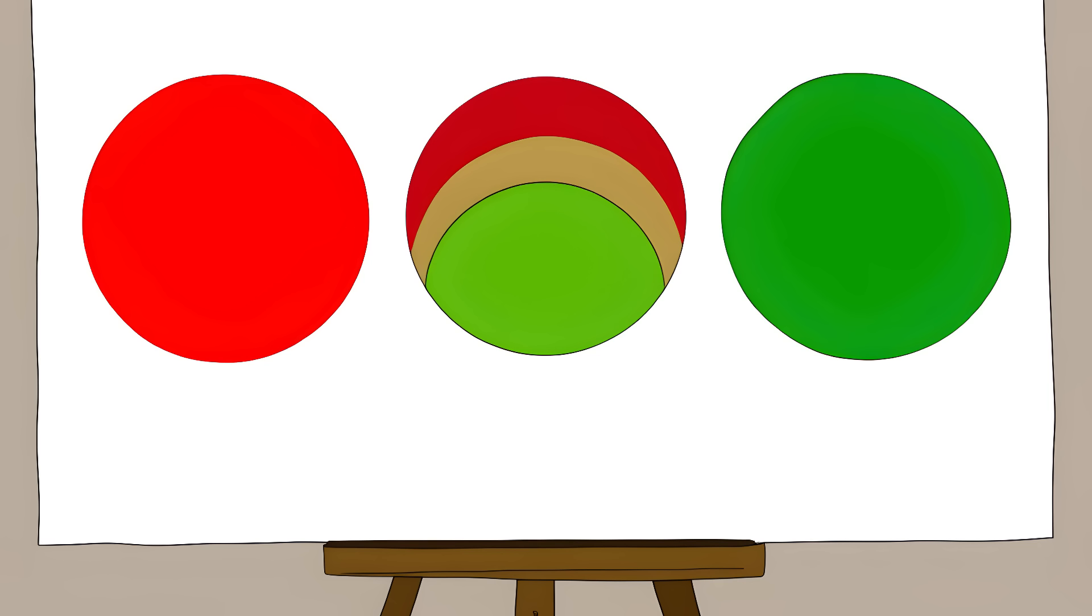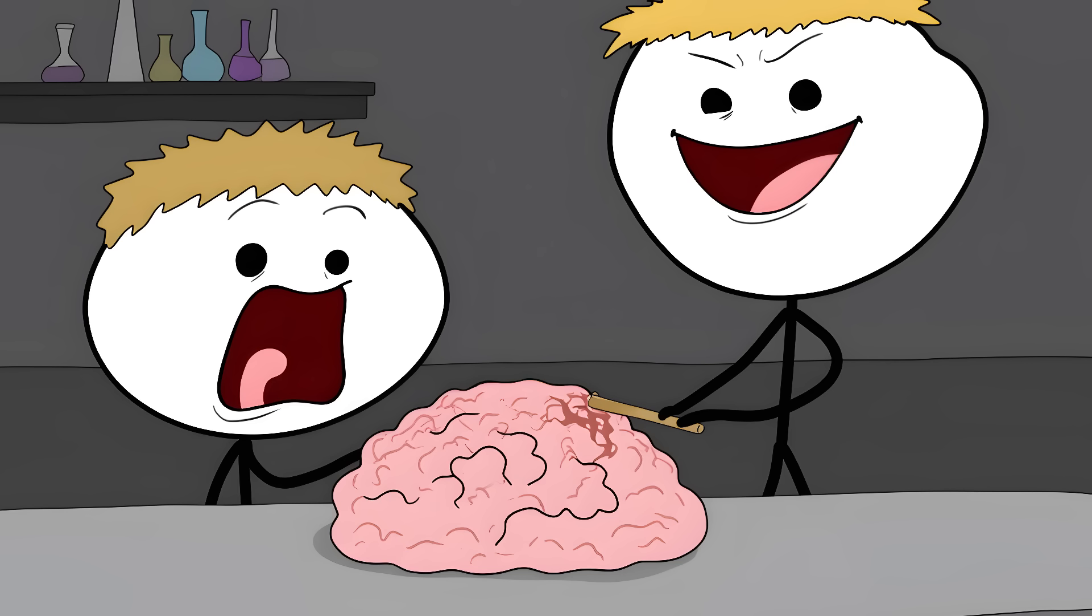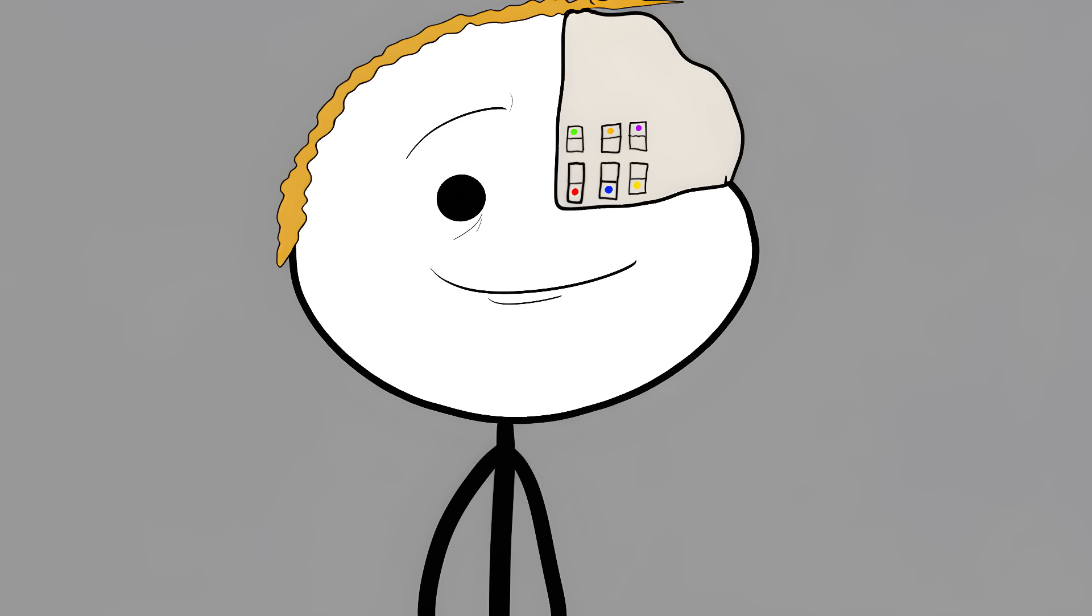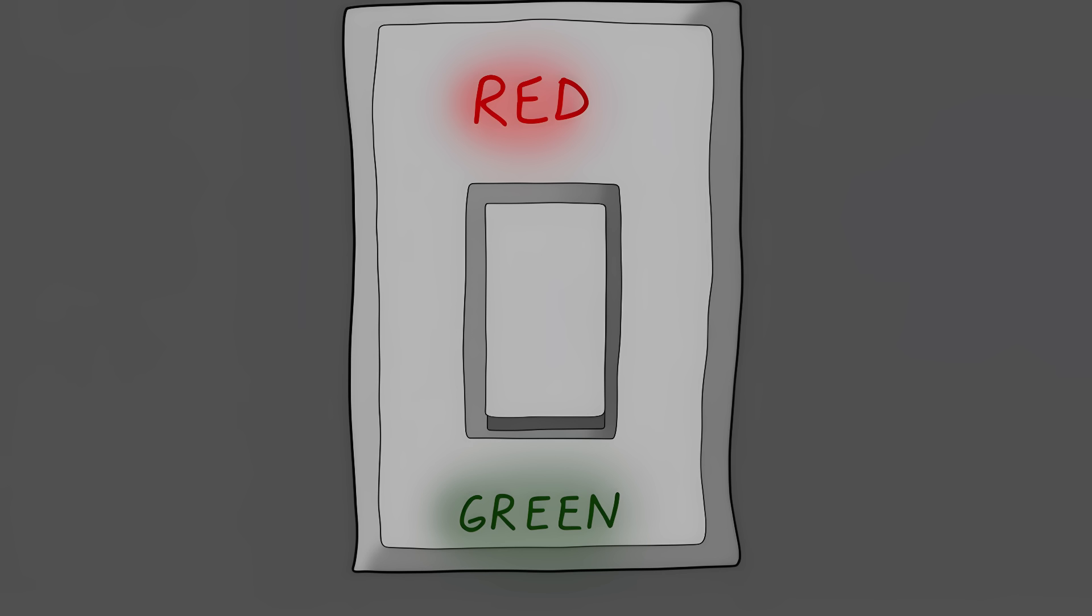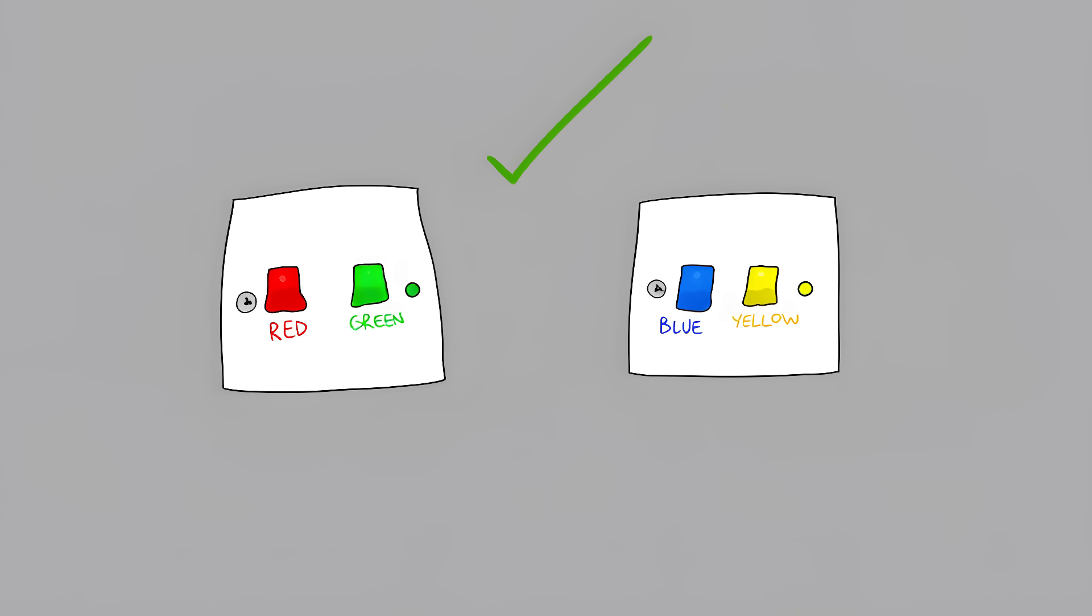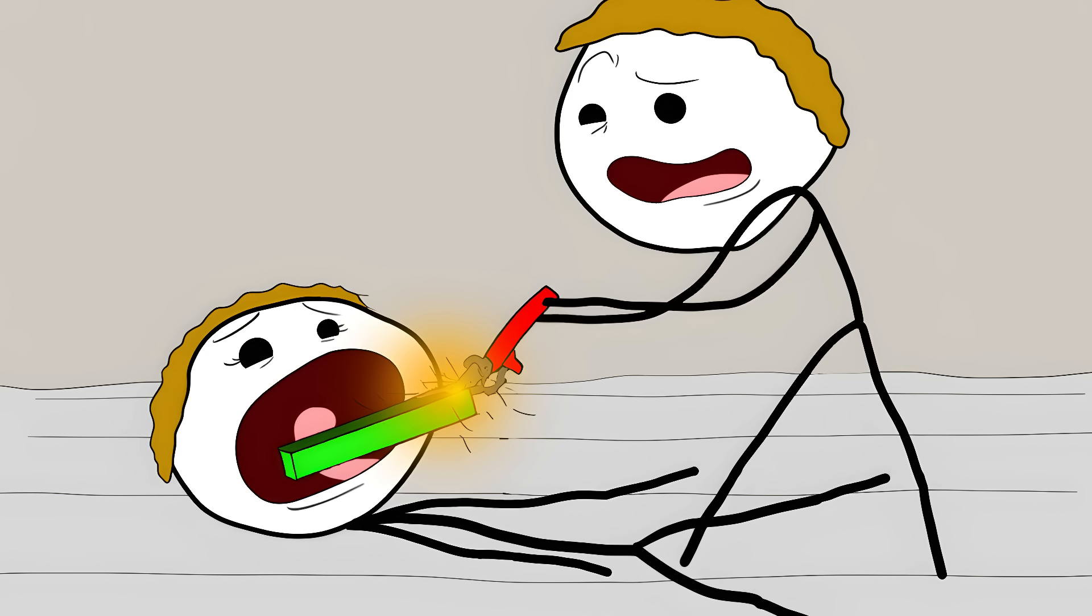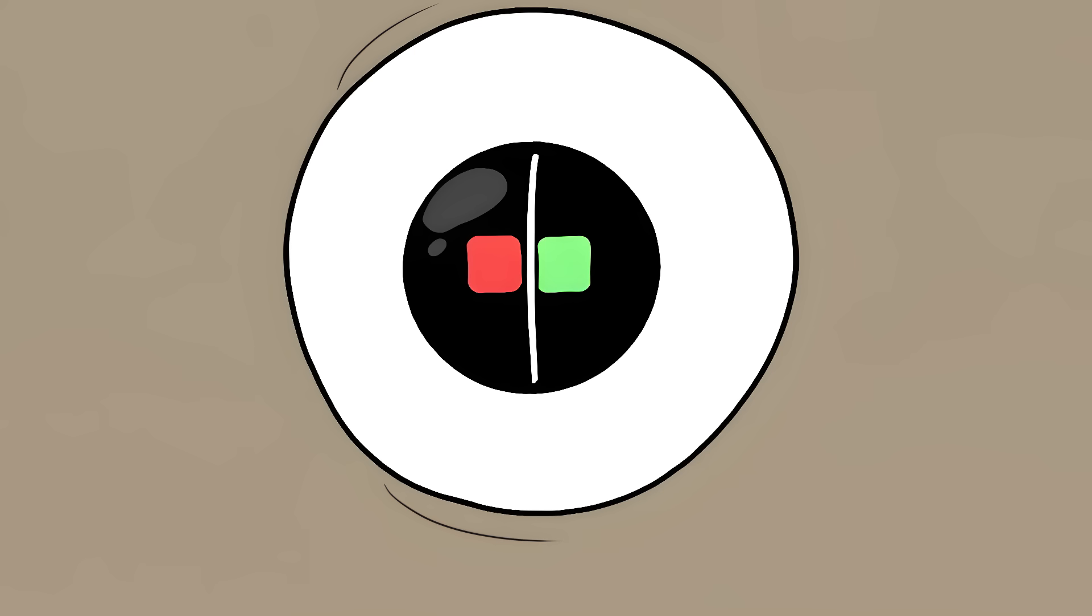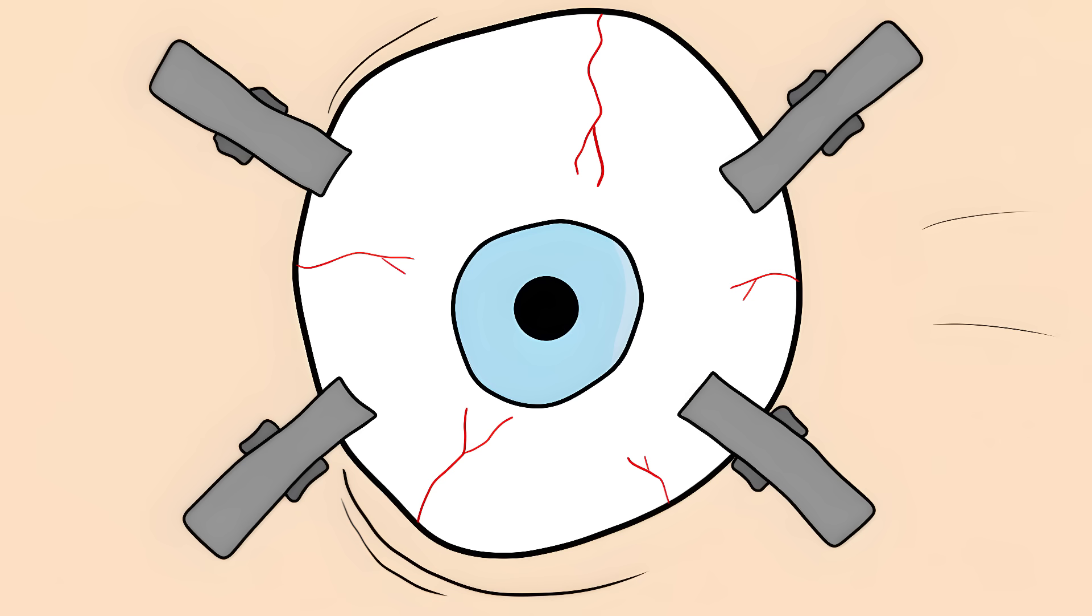These are called impossible colors, and your brain can be tricked into creating them. Your eyes have a set of light switches for color. One switch controls red and green—you can flip it to red or green but not both at once. The same goes for another switch that controls blue and yellow. But you can hack this system.